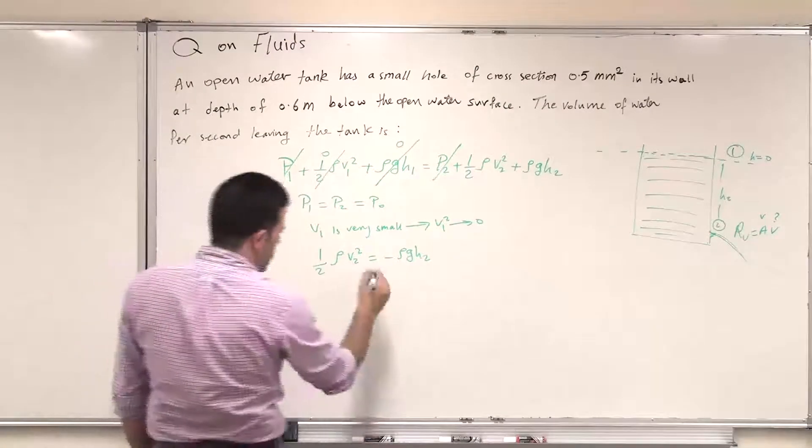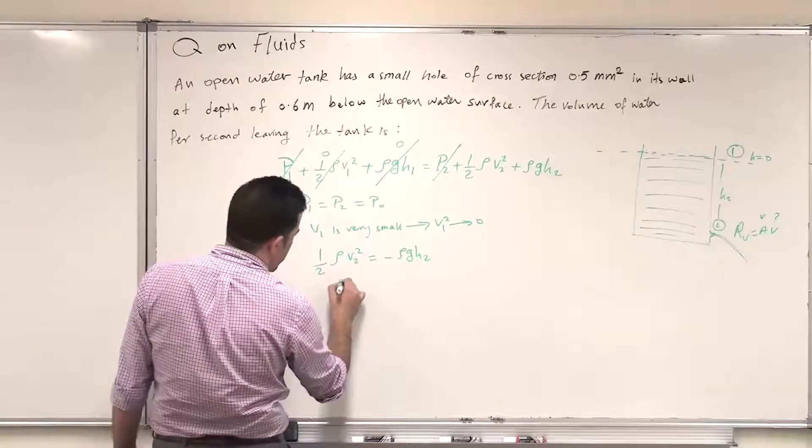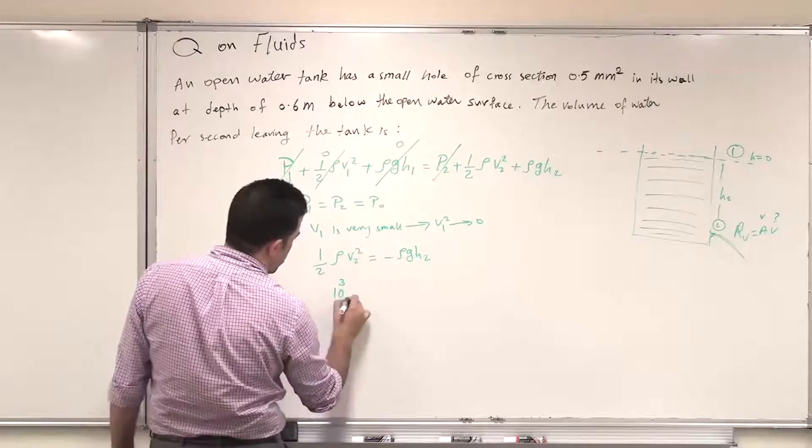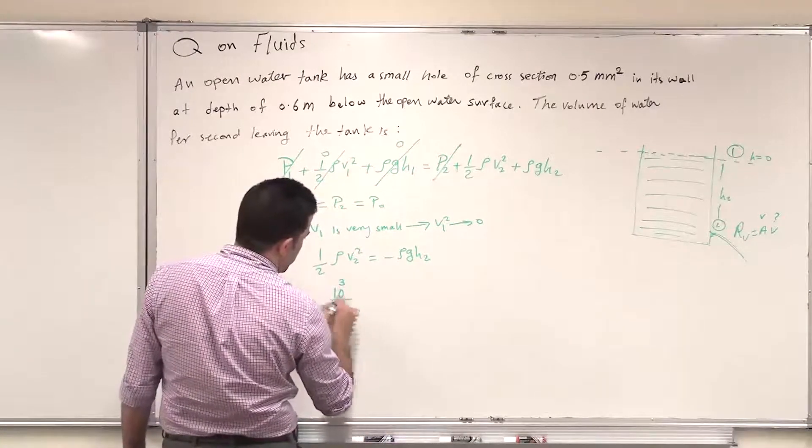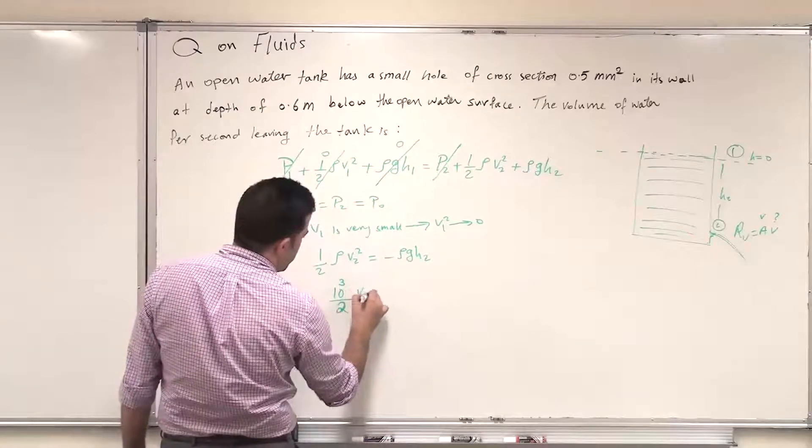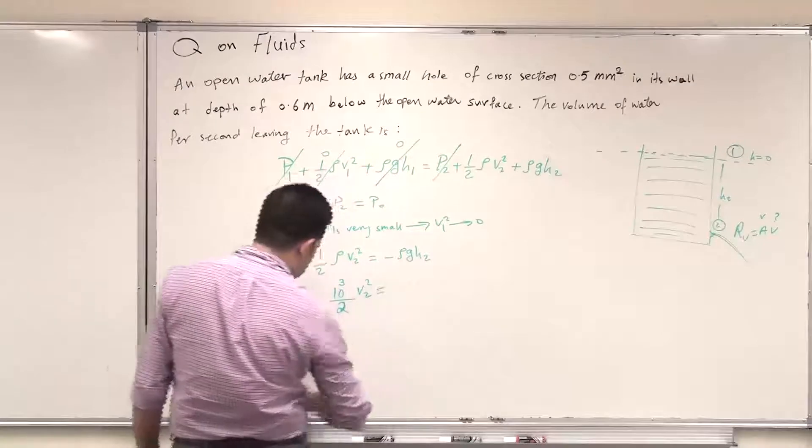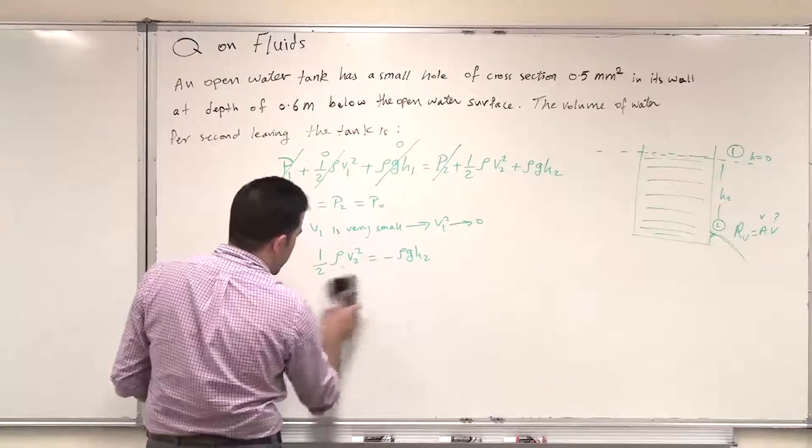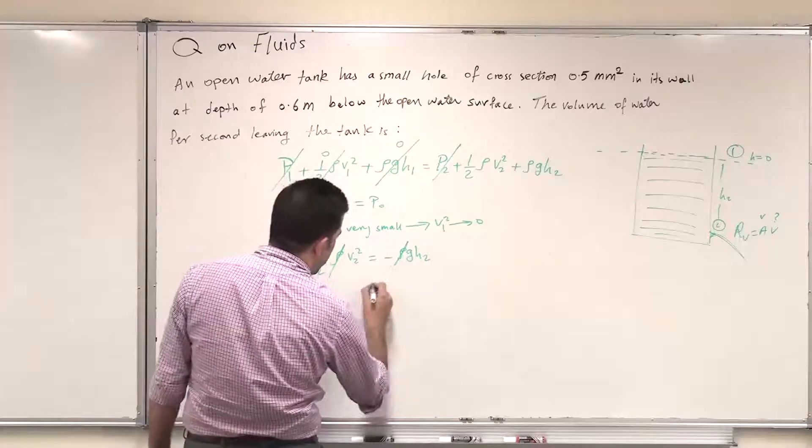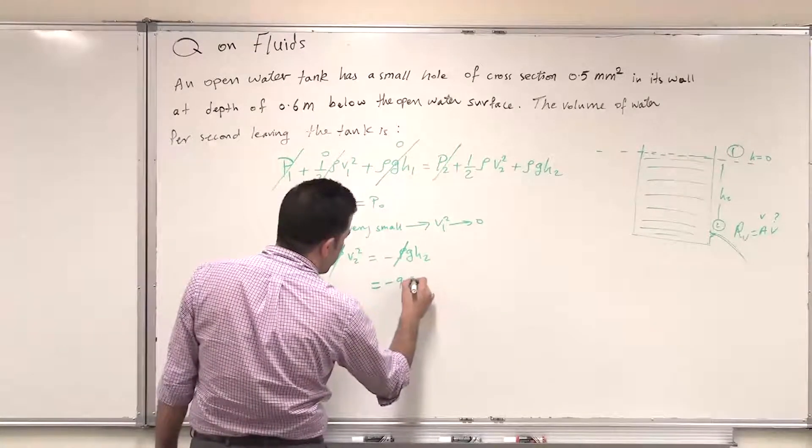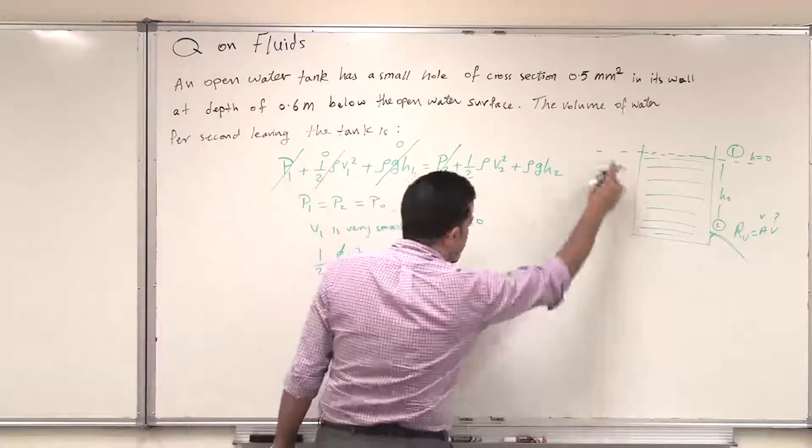So we can substitute for the density of water 10 to the power 3 kilogram per meter cubed divided by 2 multiplied by V2 squared should equal minus. Actually we can cancel out the density of water.